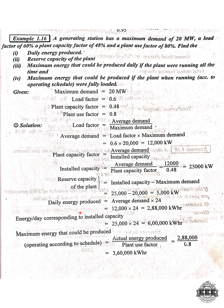Next, the daily energy produced. Daily energy produced equals average demand into 24 hours. So that is 12,000 into 24, which gives 288,000 kilowatt-hours. Next, the energy per day corresponding to the installed capacity: that is 25,000 kilowatts, which is the installed capacity per day.